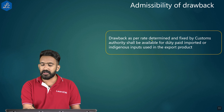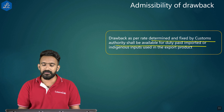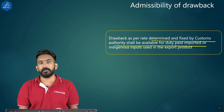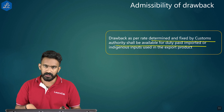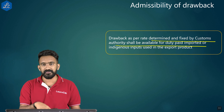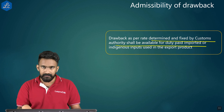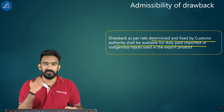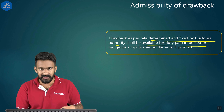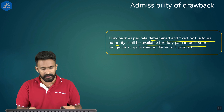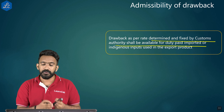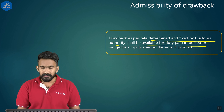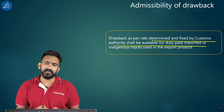Drawback, as per rates determined and fixed by customs authority, shall be available for duty paid imported or indigenous inputs used in the export product. So there are two options: either import duty free under DFIA, or pay the duty and then claim it back under drawback. Both drawback and DFIA are permitted, and you can choose either route.